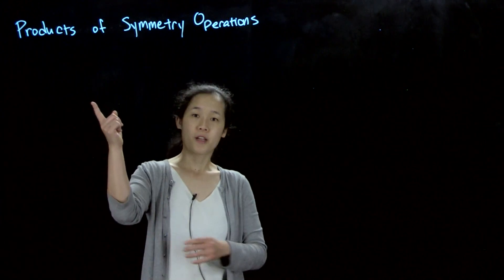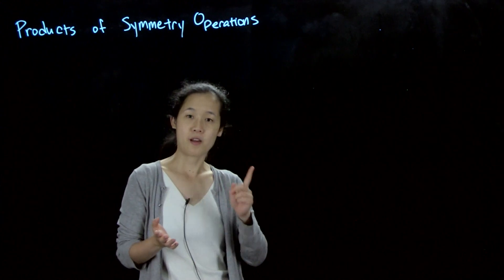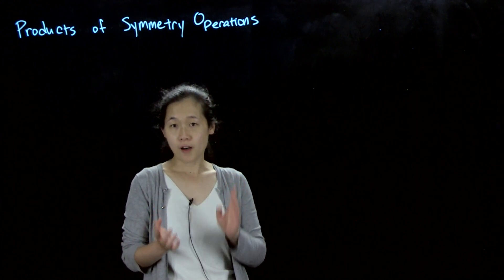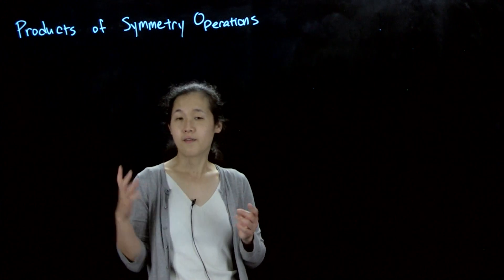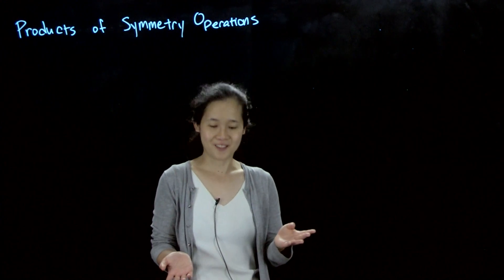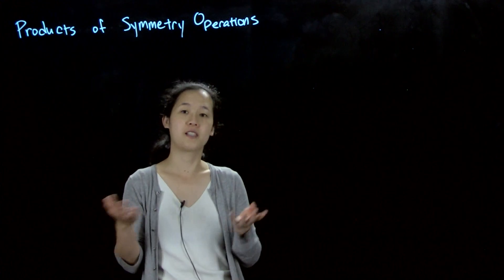Let's talk about products of symmetry operations. When you do a symmetry operation on a molecule and then follow it by another symmetry operation, you often will generate a different symmetry operation that is still a valid symmetry operation of the molecule. By two, you still have to go back to your original orientation.